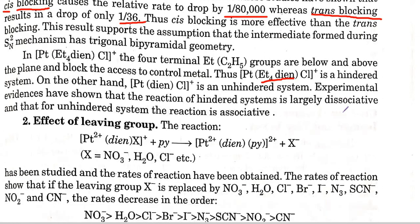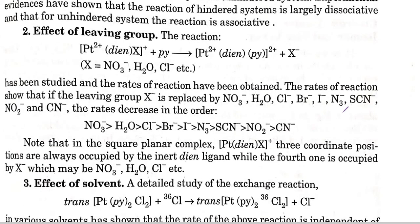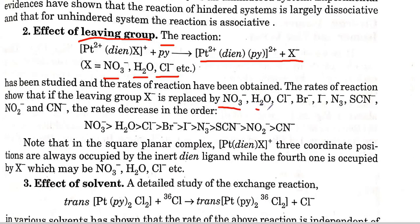Generally, the steric effect determines whether a substitution reaction can be fast or slow. The second important factor in square planar complex substitution reactions is the effect of the leaving group. For example, we have a complex where pyridine is the attacking nucleophile and X is the leaving group. X can be a nitro group, water, chloride, azido, or cyanide.